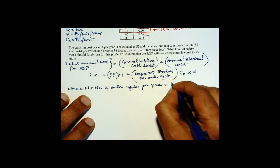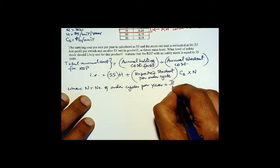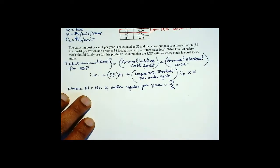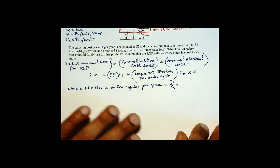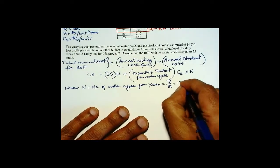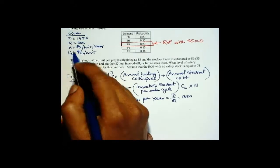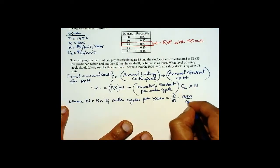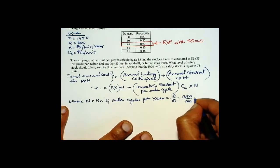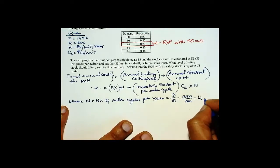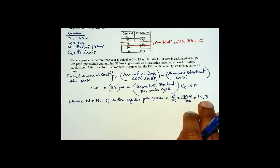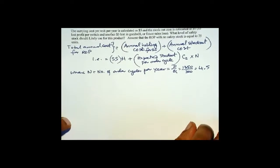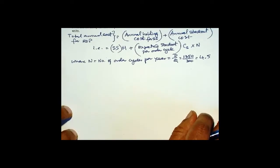N is the number of order cycles per year, and that equals D over Q. For our problem, D is 1350 divided by Q of 300, which is 4.5. Don't round this — on average we have 4.5 order cycles per year.